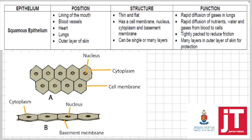The first tissue is squamous epithelium — one of the most important types, discussed in grade 10, 11, and 12. Looking at the diagrams, this is a surface view and this is a longitudinal section. The cells are regular in shape, tightly packed, and living. There are two types of epithelium: simple epithelium, made up of a single layer, and stratified epithelium, made up of many layers. Squamous epithelium is a simple epithelium — a single layer of cells.